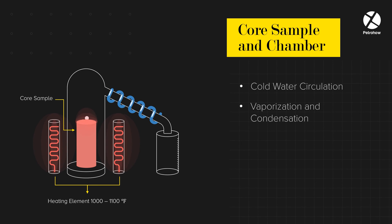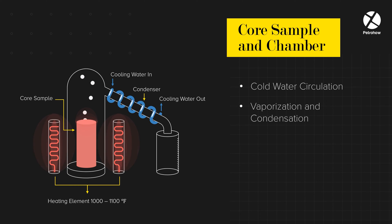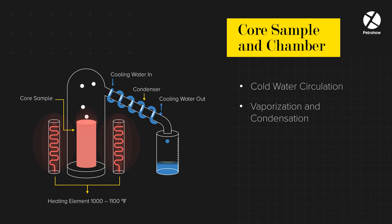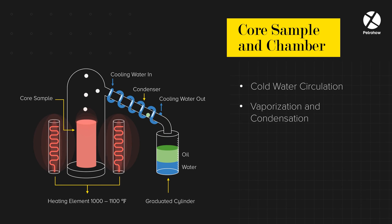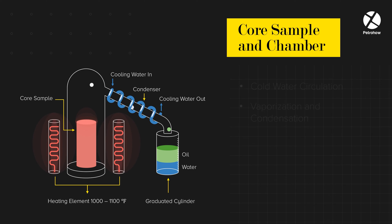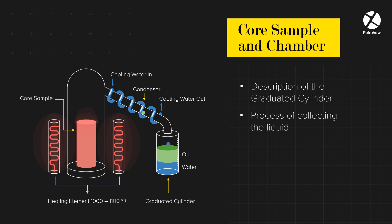The vapors produced will rise and reach a condensing tube where cold water is being circulated. The vaporized liquids will then condense back to liquid form. These condensed liquids are collected in a graduated cylinder after passing through the condensing tube and can be measured.